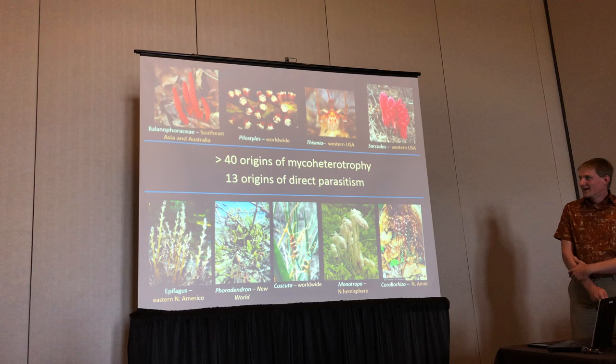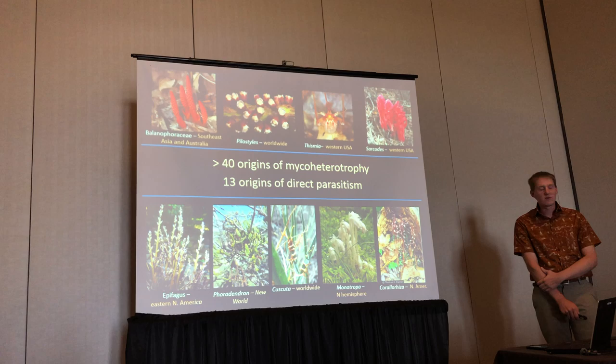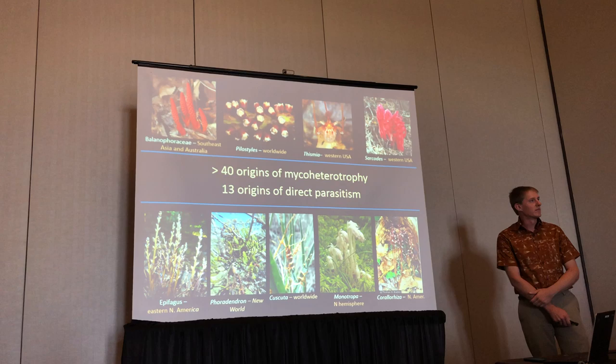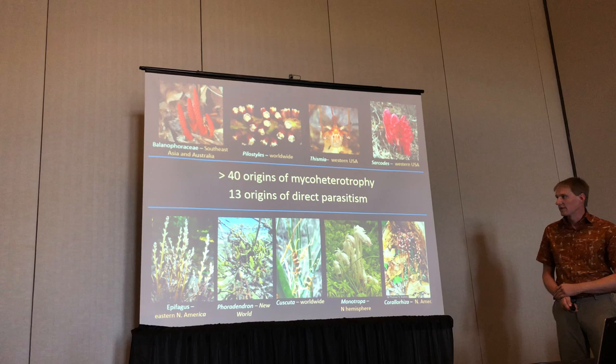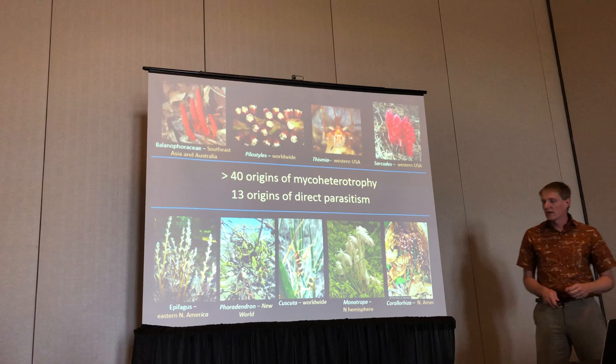Heterotrophic plants are an amazing twist on what we normally think of as the plant life history. All of these images here represent different evolutionary origins of plants that have changed their life history in order to obtain nutrients from other organisms, instead of obtaining them from abiotic sources like the soil or using sunlight to do photosynthesis. Among angiosperms, we probably have about 13 origins of direct parasitism, where the plant is directly attached to the vascular tissue of its host.